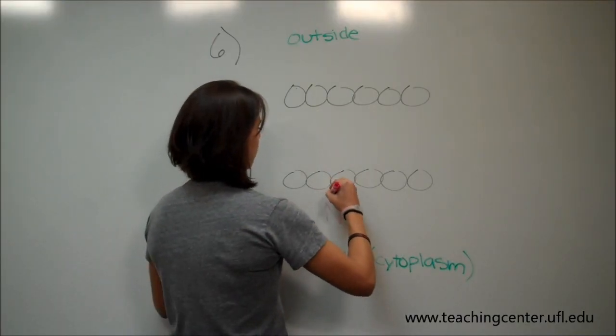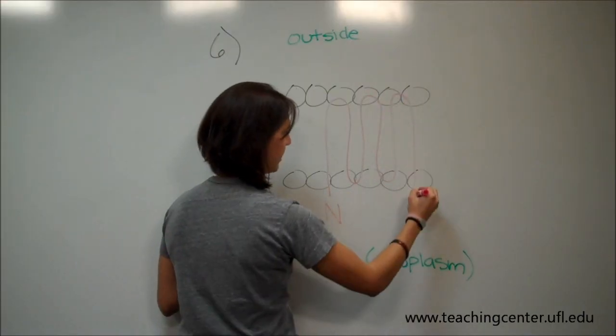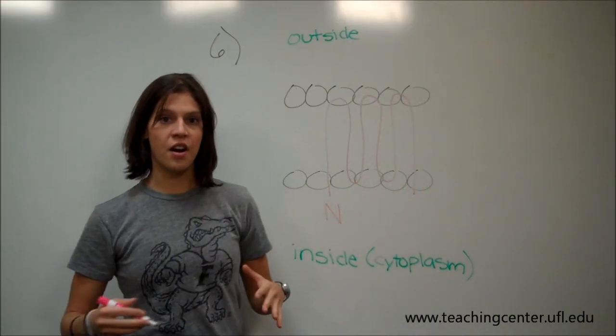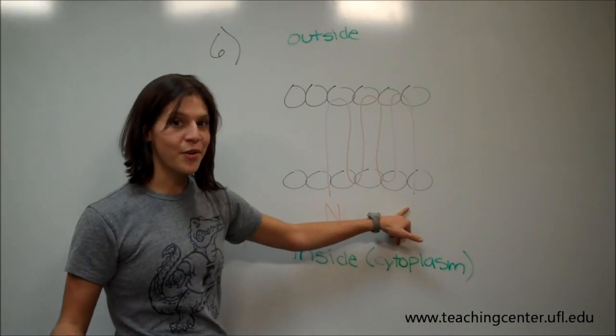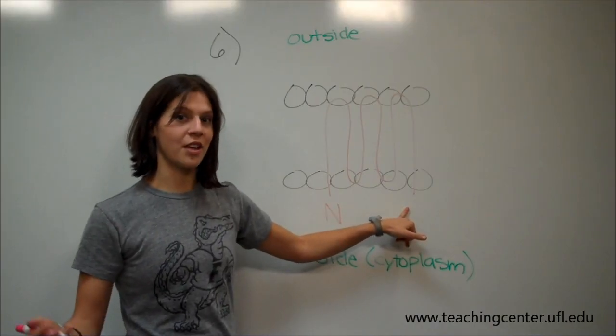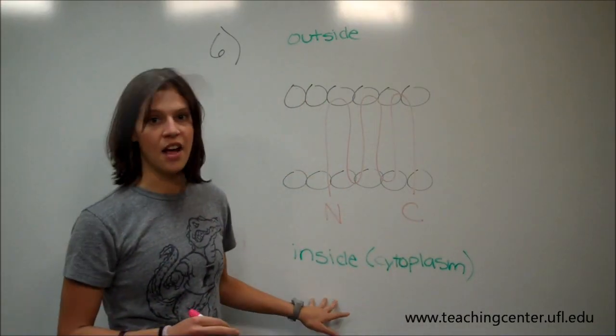We've got one, two, three, four, five, six. And that's the end of our membrane protein. And the other end of a membrane protein is the C-terminus. So from this, we can conclude that the C-terminus lies on the inside of the cell.